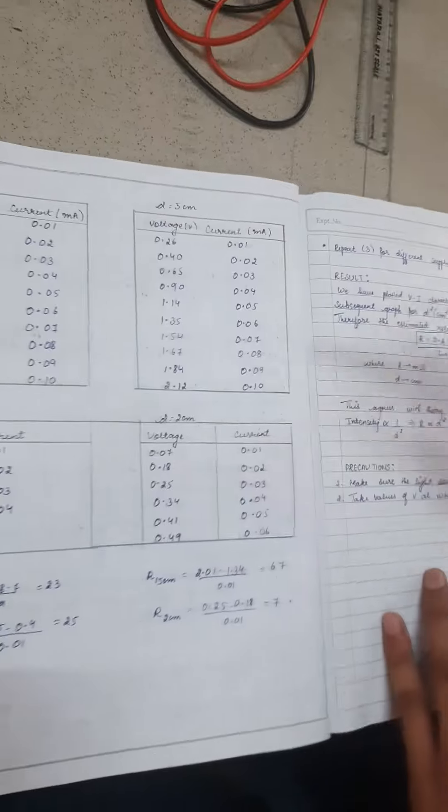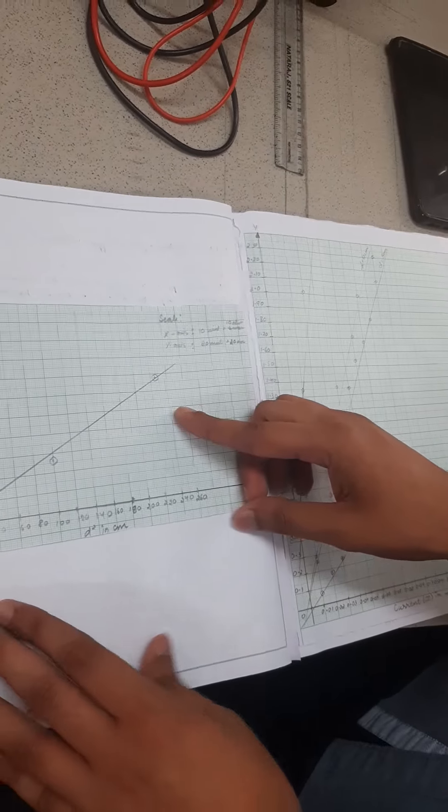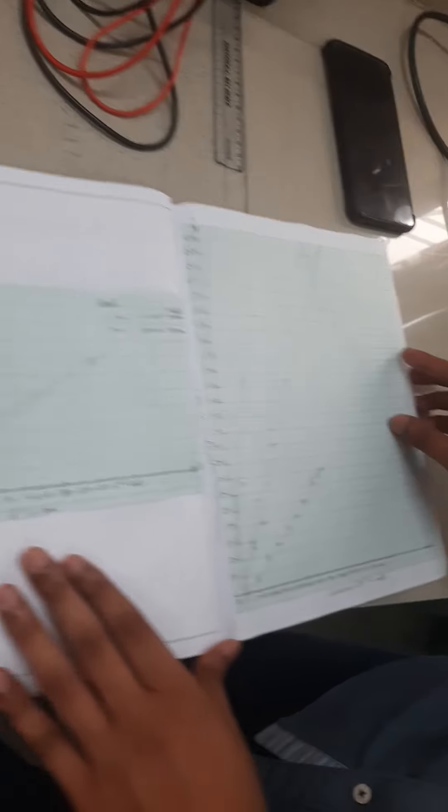We plot these values on a curve. We find out that the resistance versus d squared curve is almost linear, which we predicted from the relation we obtained.